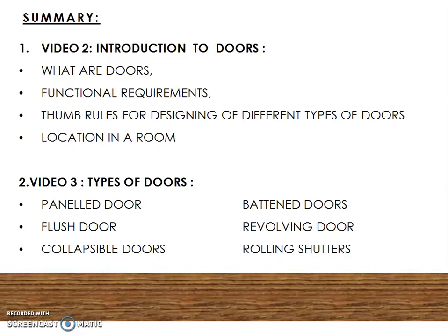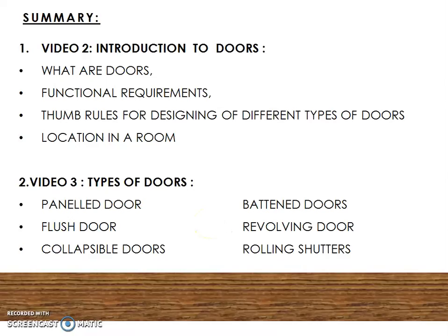In video 3, we have discussed about the types of doors. We discussed about the panel door, flush door, pattern door, revolving door, collapsible doors, and rolling shutters — their materials, design considerations, and functional requirements in different types of buildings.